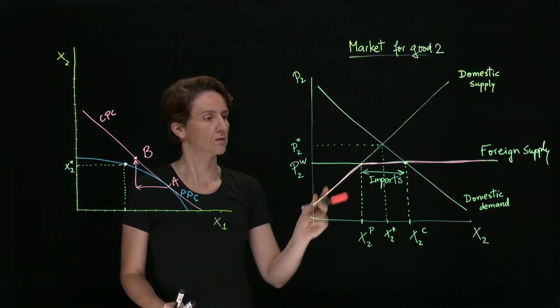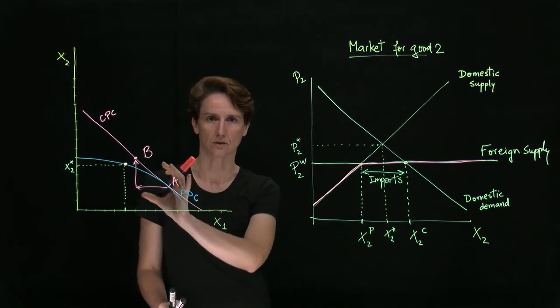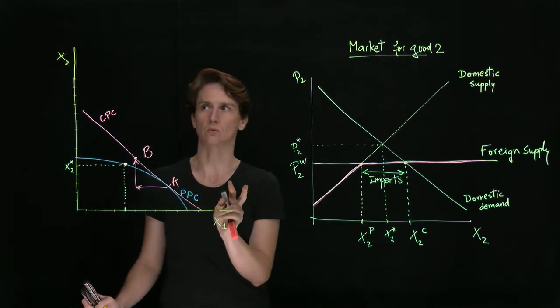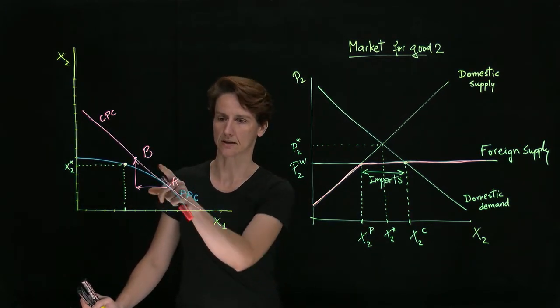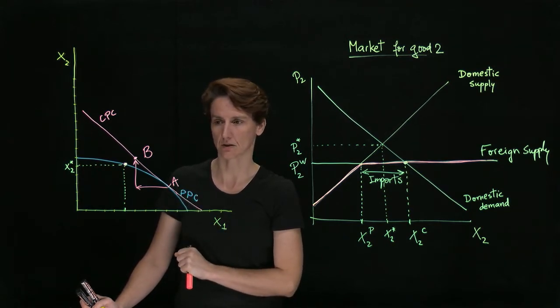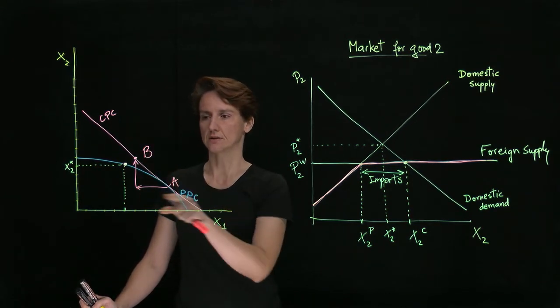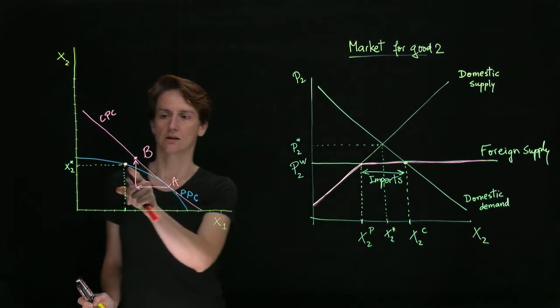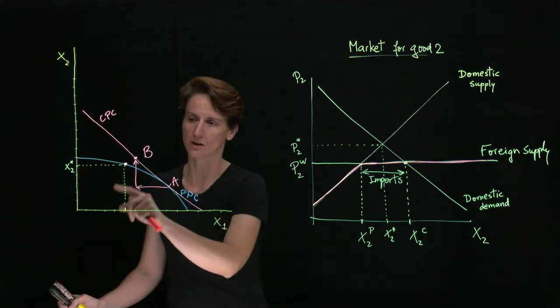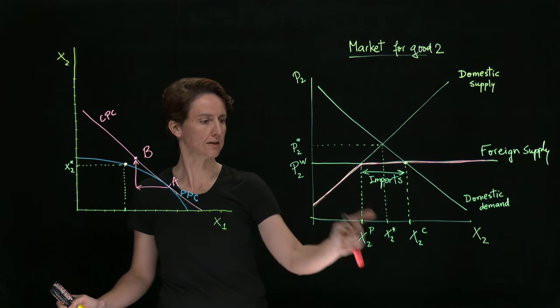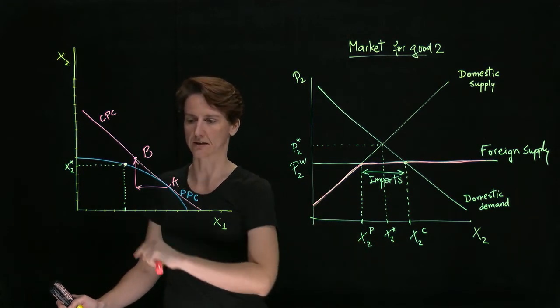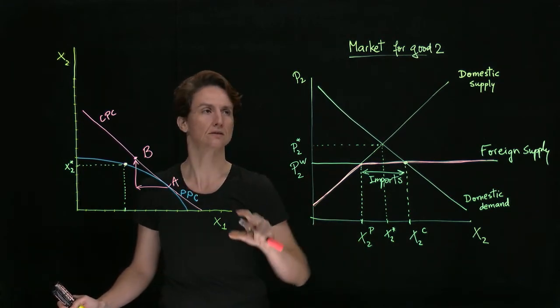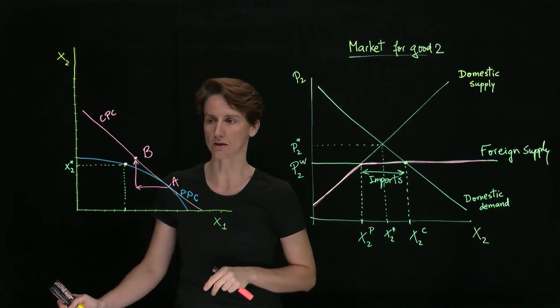If we want, we can link this to our graph from before, from where we were drawing the consumption and production possibilities curves. For the country shown here, the consumption and production without trade were as marked here. That's the X2 star, and this would be X1 star, which we can show separately in the market for good one.